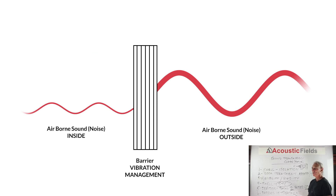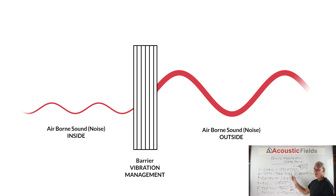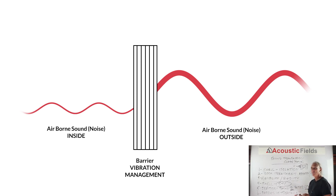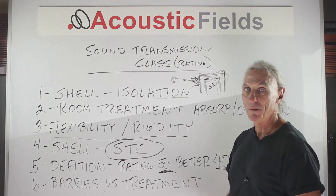In this graphic, you can see airborne energy striking the barrier — and obviously we want to isolate that; we don't want it getting into our room. Airborne energy strikes a structure, which then turns into vibrational energy. The goal of the barrier is to stop those vibrations from becoming sound energy within our room.